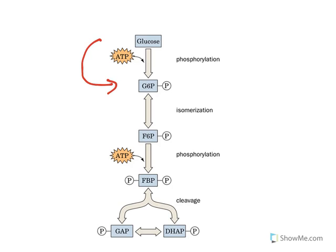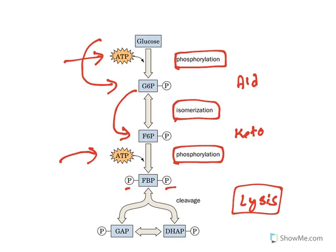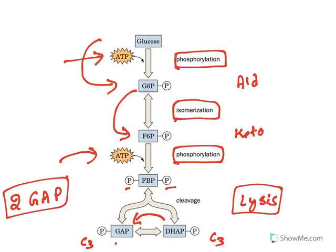Glycolysis starts with glucose being converted to glucose-6-phosphate — a phosphate group is attached to the sixth carbon, which is phosphorylation, and it consumes ATP. Then glucose-6-phosphate is isomerized: glucose (an aldehyde derivative) is converted to fructose (a keto derivative). One more phosphorylation consumes another ATP and fructose-1,6-bisphosphate is formed. This is the main lysis step: the 6-carbon fructose is cleaved to 3-carbon glyceraldehyde-3-phosphate and 3-carbon dihydroxyacetone phosphate, which interconvert, ultimately giving 2 molecules of glyceraldehyde-3-phosphate.